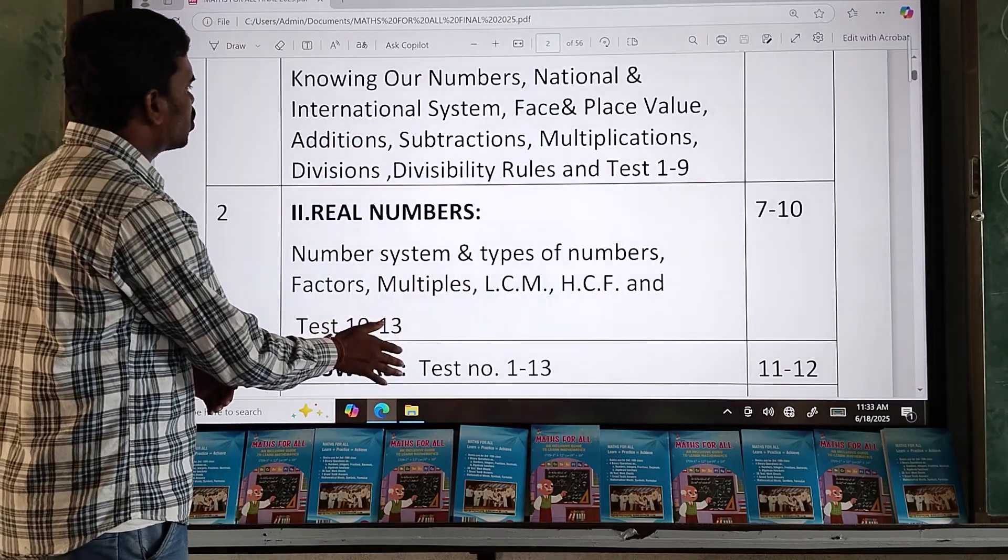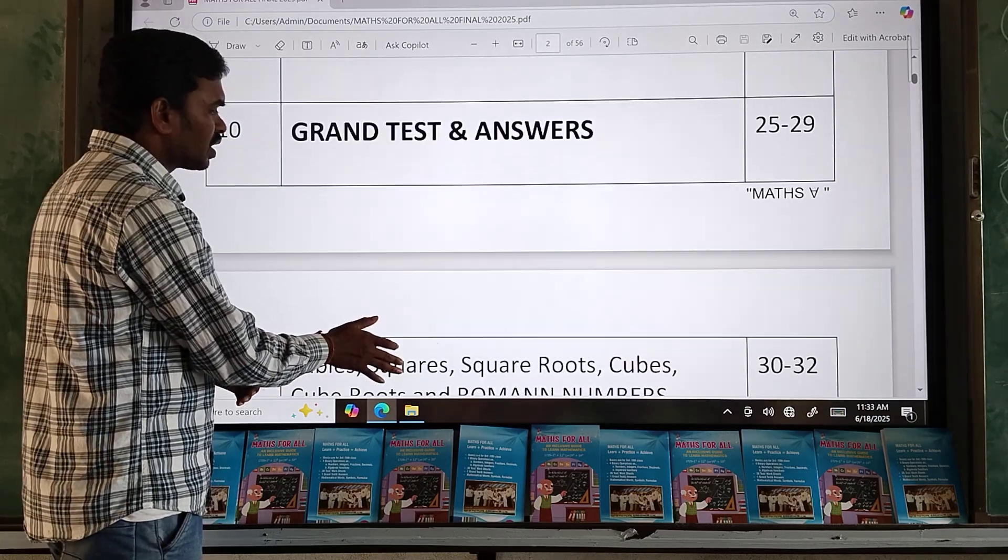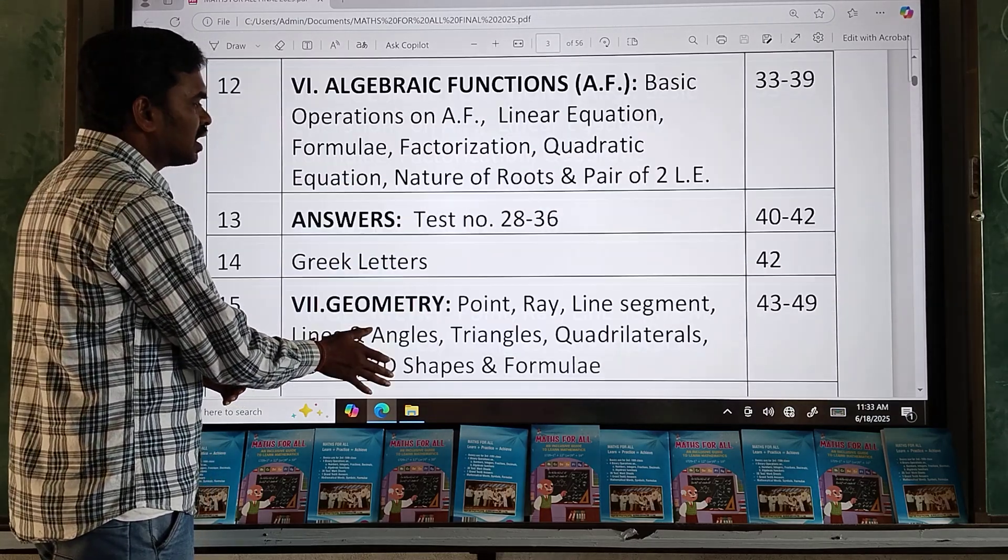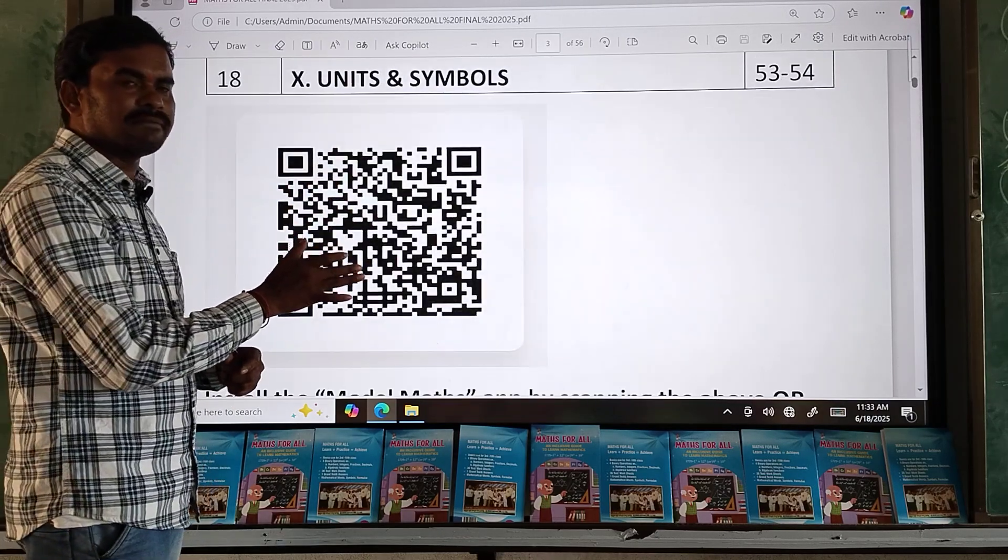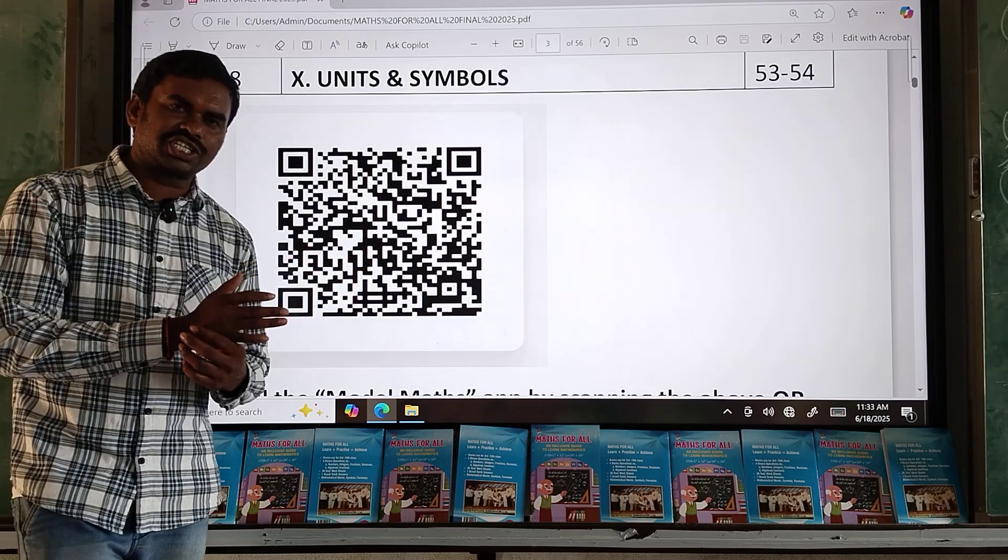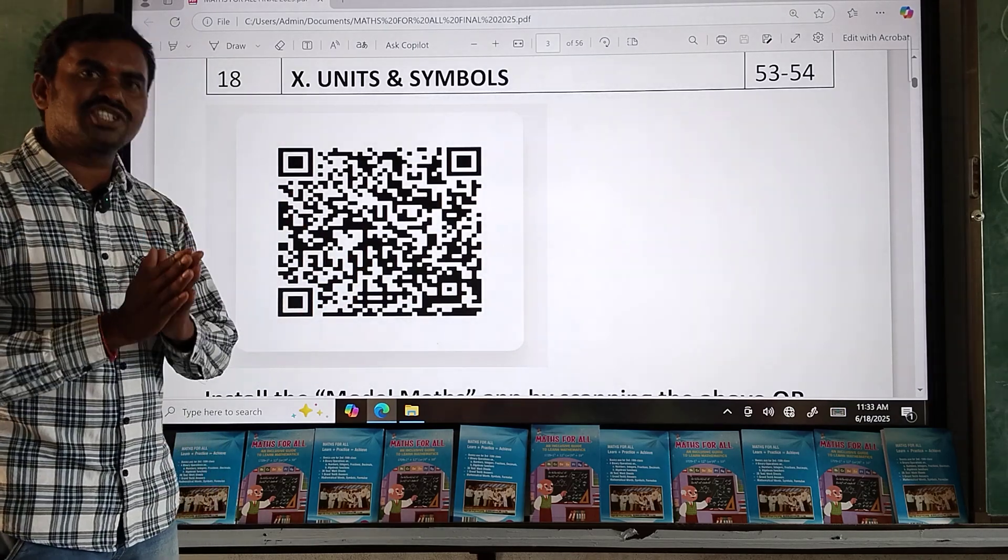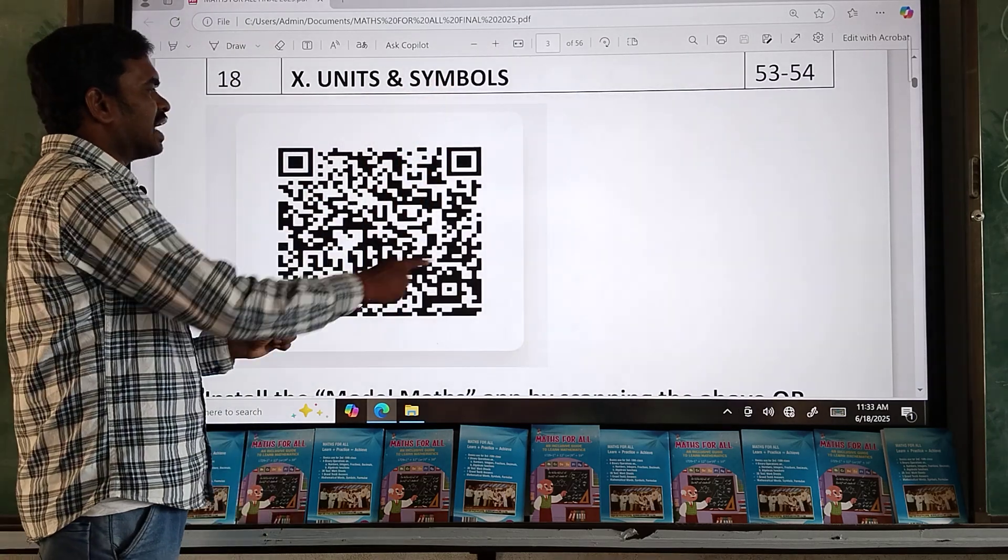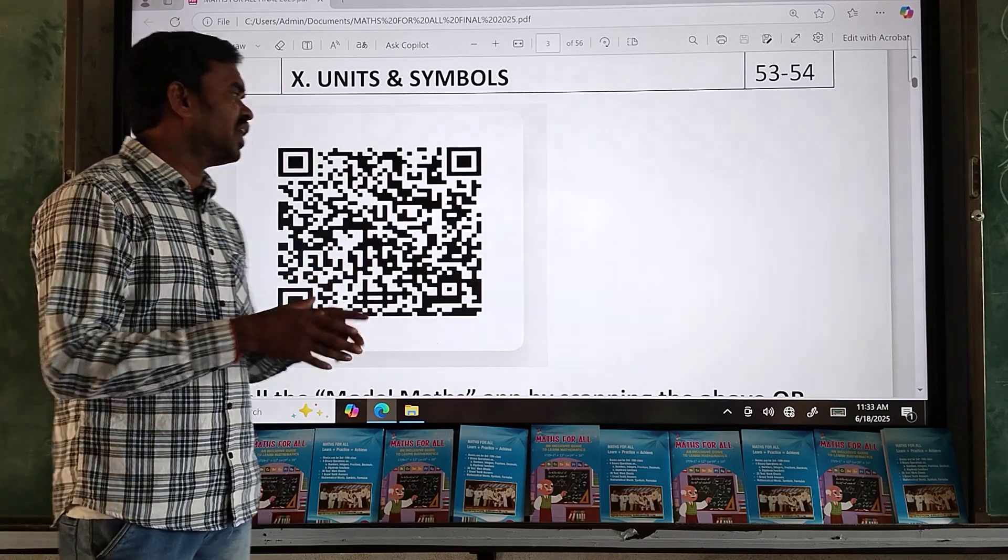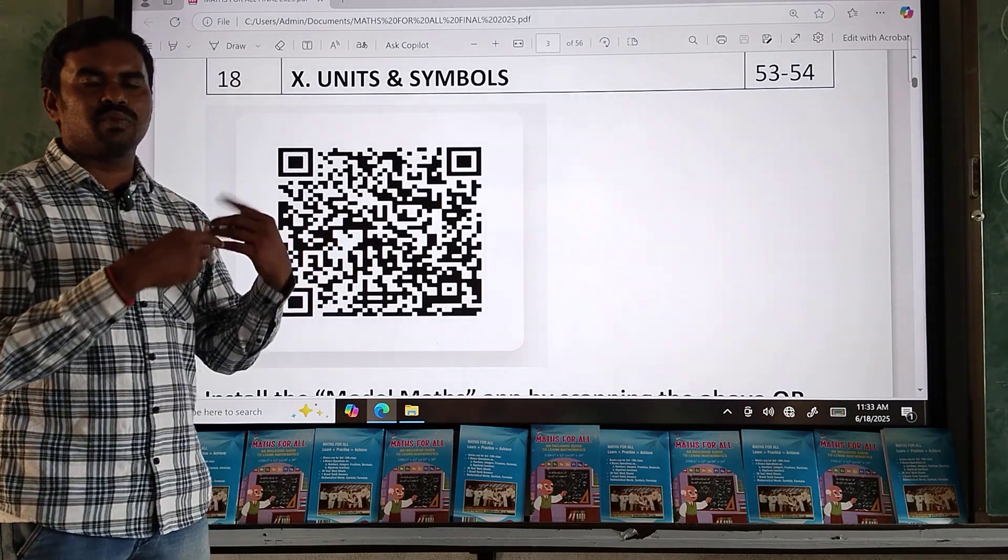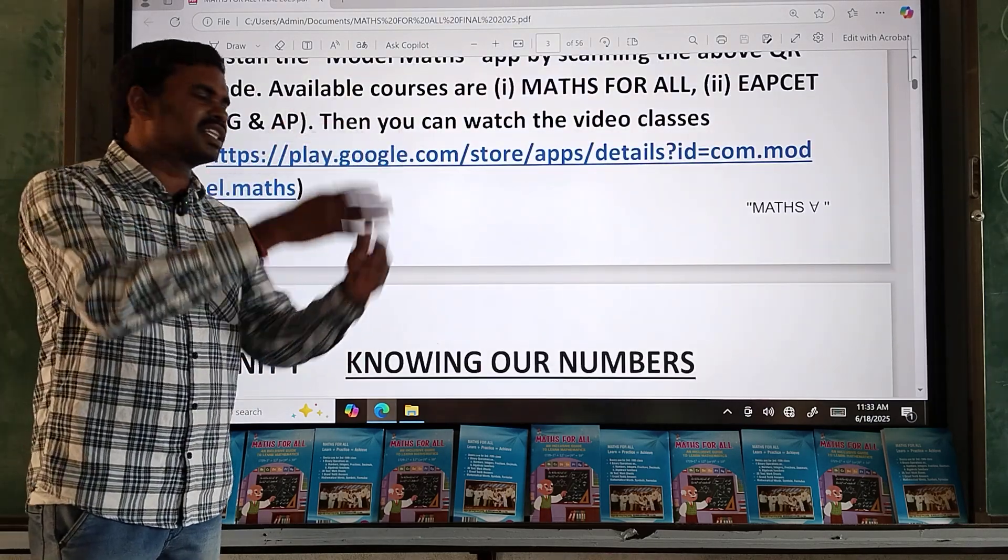First of all, here I am showing the content. In this book, 10 units are there. Explanations are there, immediately some questions are there, test or worksheet. After that, answers are also provided. So this is the scanner. Even if you want to see the video classes, you can scan and download via Play Store app and you can listen to the classes.